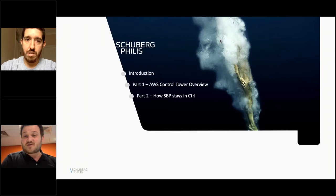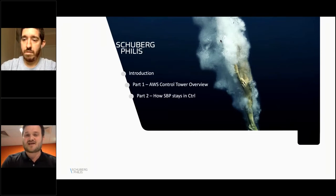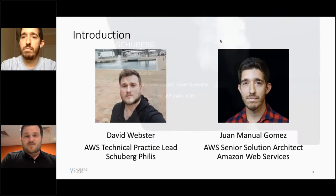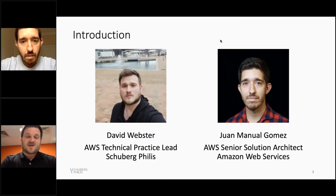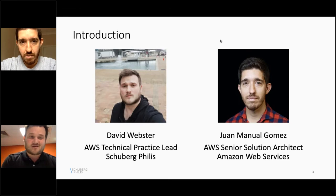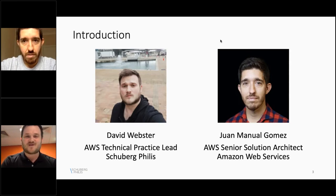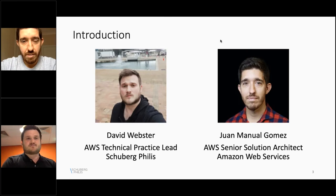Today we're going to start with a little introduction — I'm going to explain who I am and who my friend is and what we're going to show you. I'm David Webster. I'm an AWS technical practice lead at Schuberg Phyllis. I love all things hyperscale. I'm particularly fond of learning things that are AWS from customers and from teams internal here. And I like all things AWS, from CloudFormation all the way to AR services.